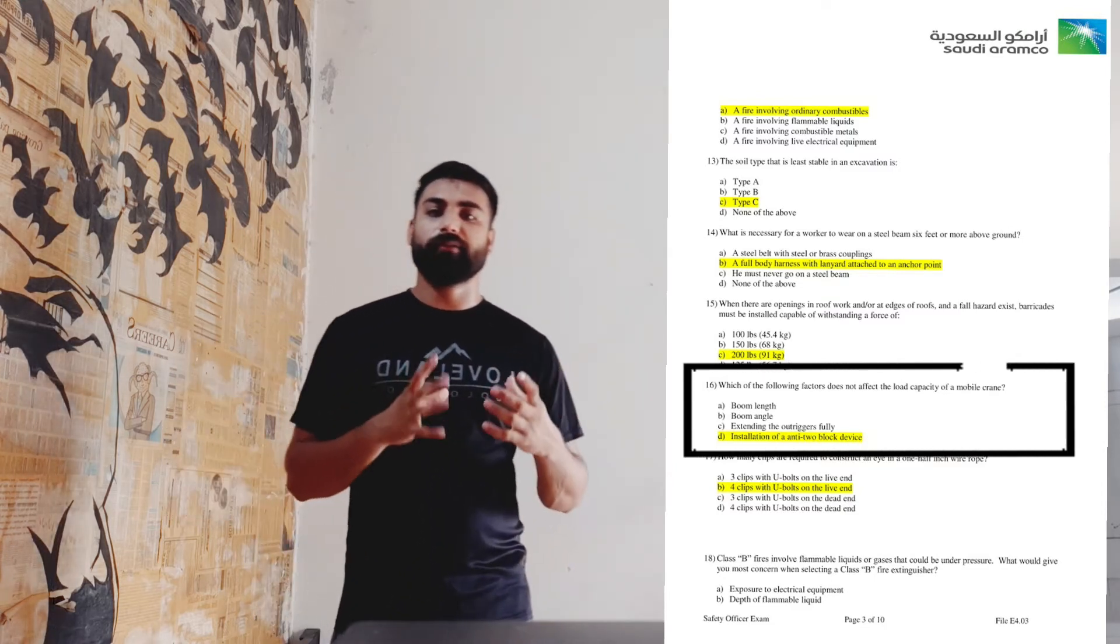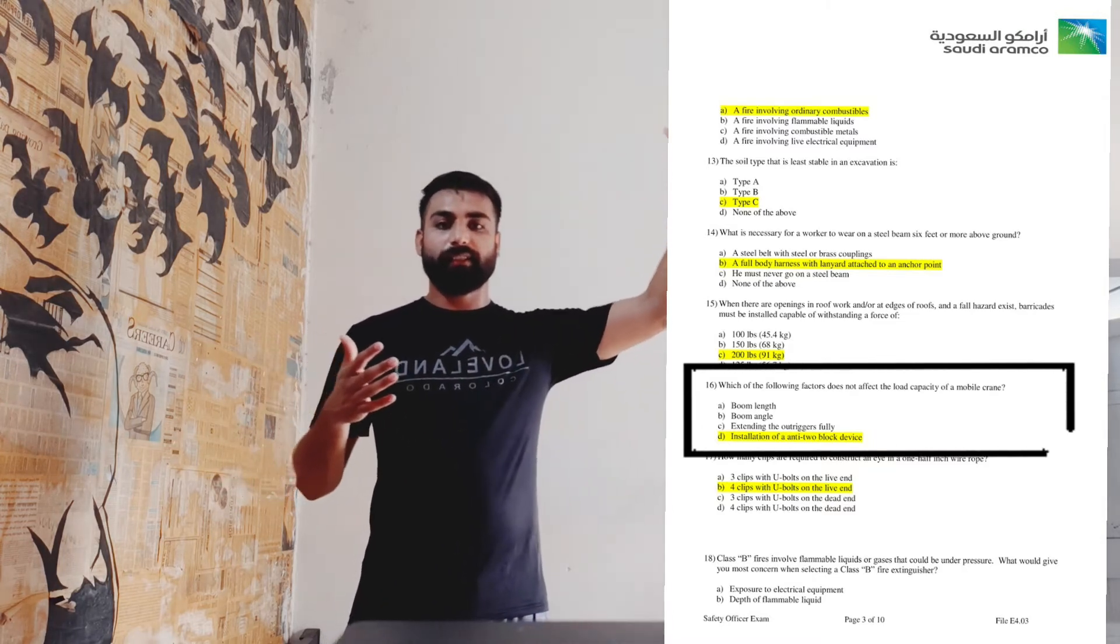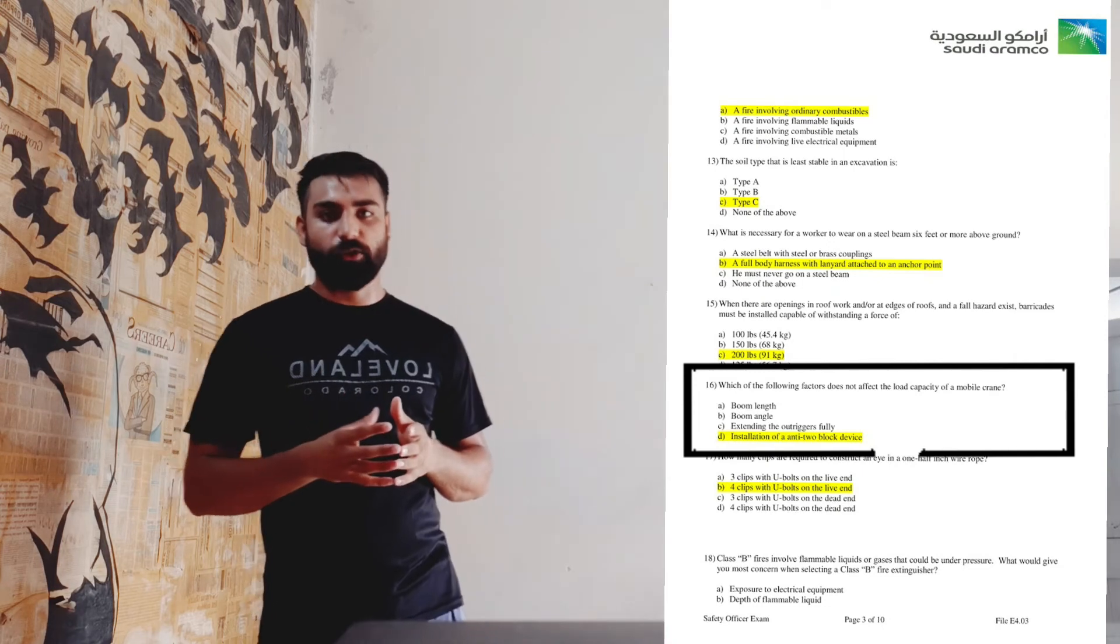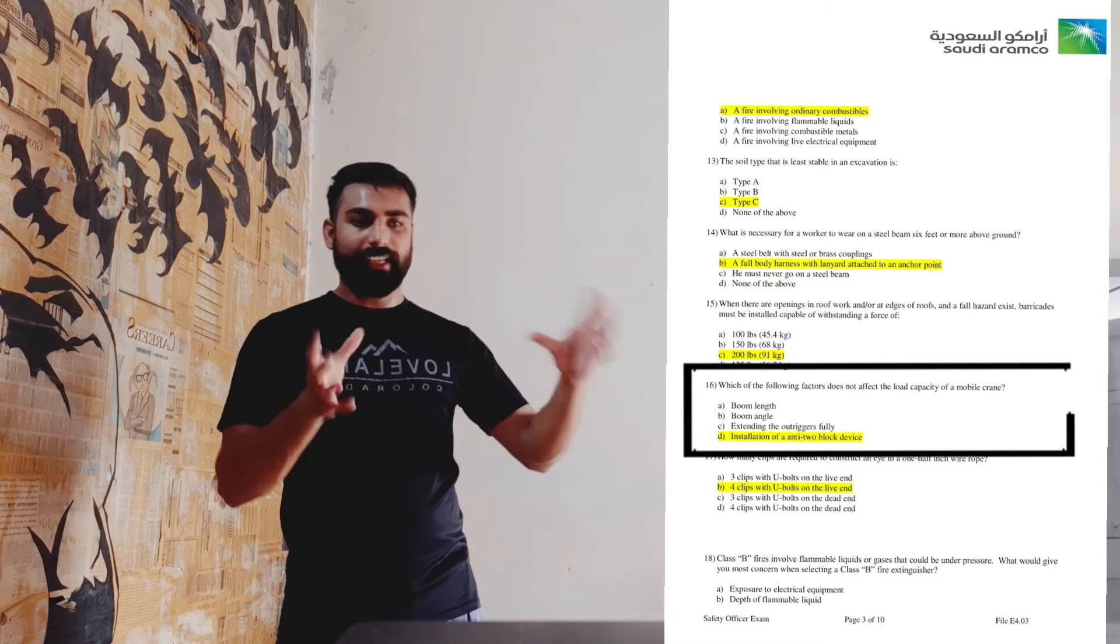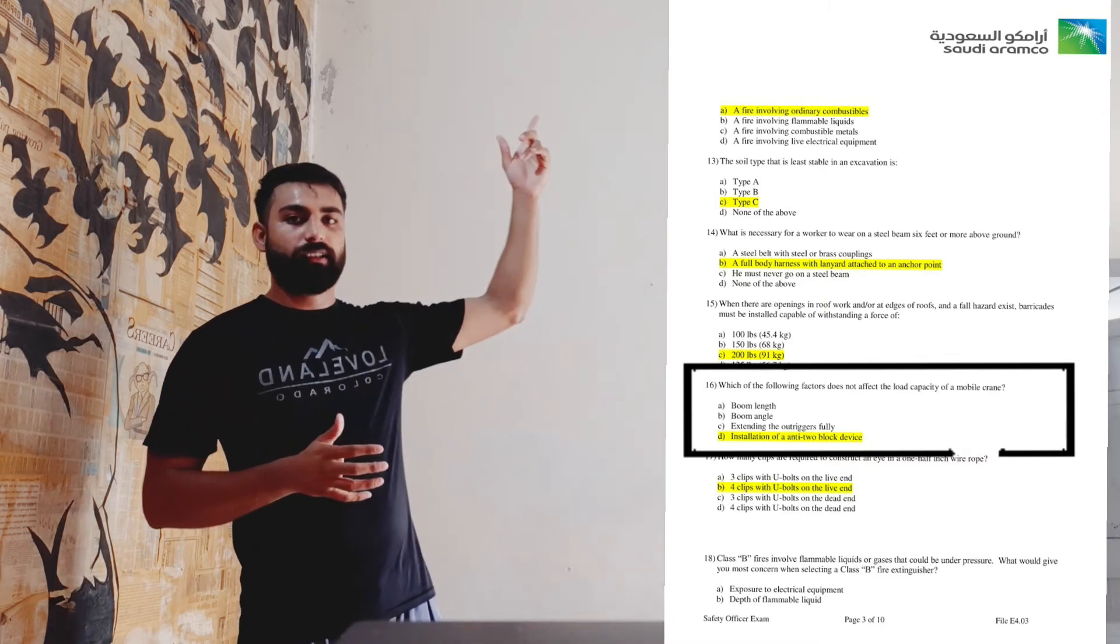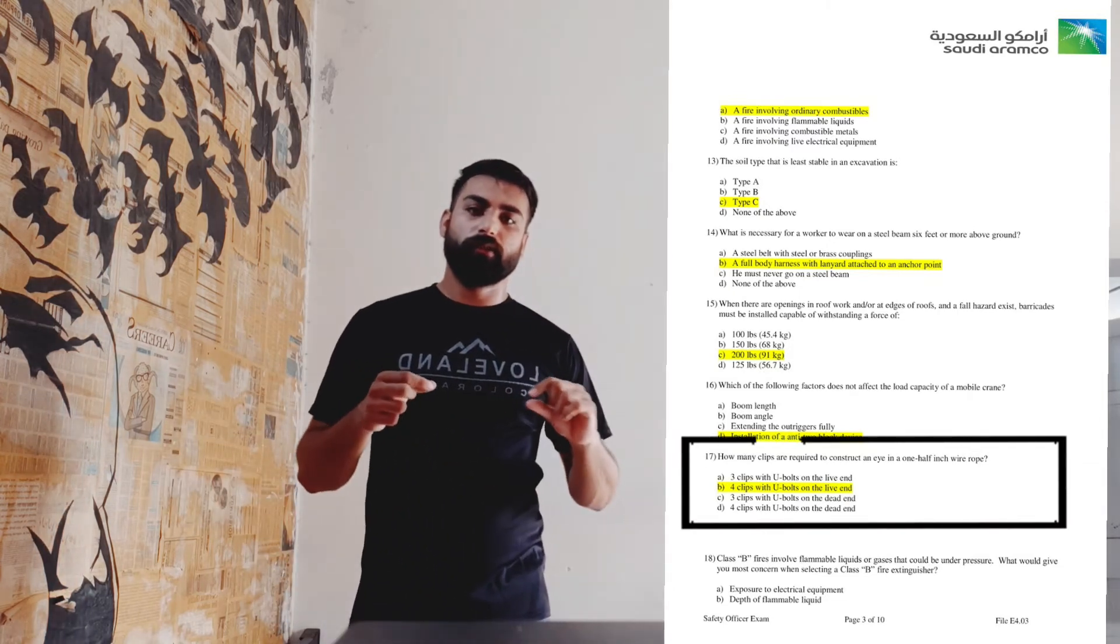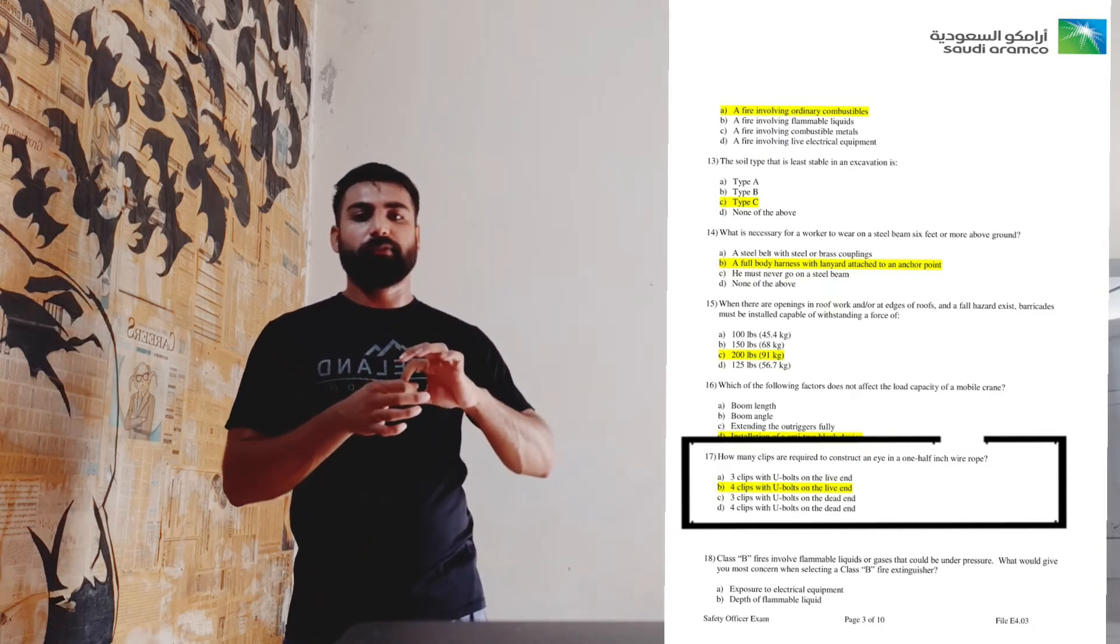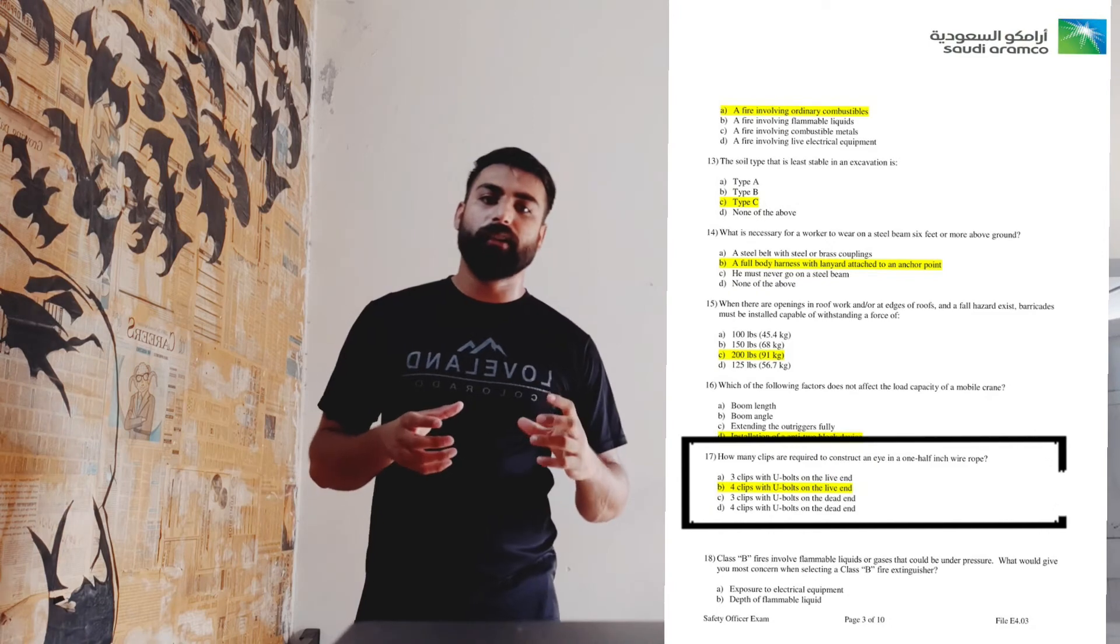As we know that boom length and boom angle heavily affect the lifting capacity. As the length of boom increases, its capacity decreases. So the only option we are having over here is anti-two-block device. We have another detailed session regarding crane activities, so you can hit the link over here. Next is whenever we are using a rope or hoist, we couple it with clips. How many clips are required on the live end of the wire? These are four u-bolts.